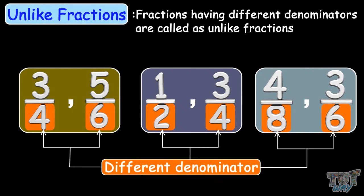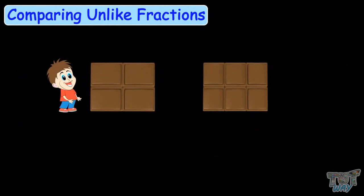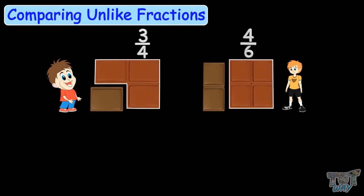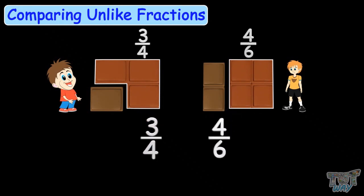Now let's see how we can compare them. One child has been given 3 fourths of a chocolate and one child is given 4 sixths of the same size chocolate. Who got more? Take the two fractions to be compared and multiply the denominator of the one with the numerator of the other, like this.